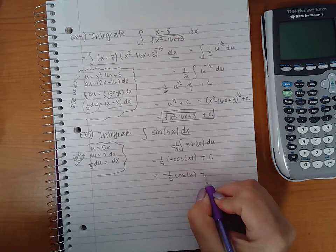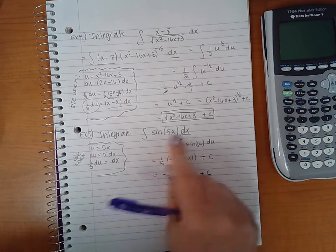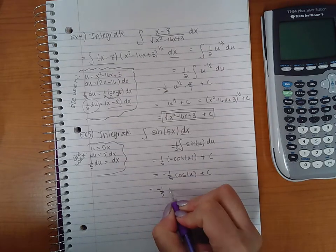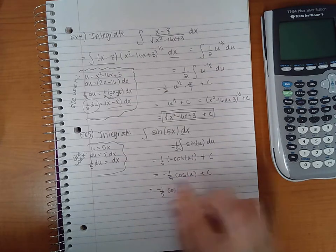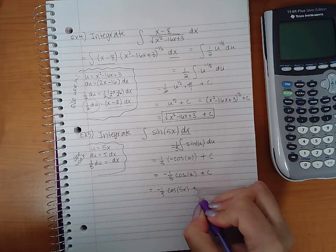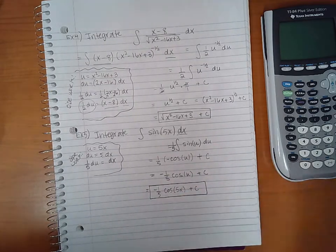The problem was not given to me in terms of u, it was given in terms of x, so I have to back substitute and plug in for u. U is 5x, so I'm going to plug in 5x there. This is already formally written, so I can go ahead and box that.